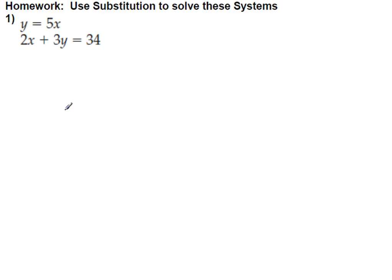Now the first step here is to get one of the variables by themselves. So you could have picked any of these four variables, but I'm hoping most of you picked this y to get by itself because it's already by itself.